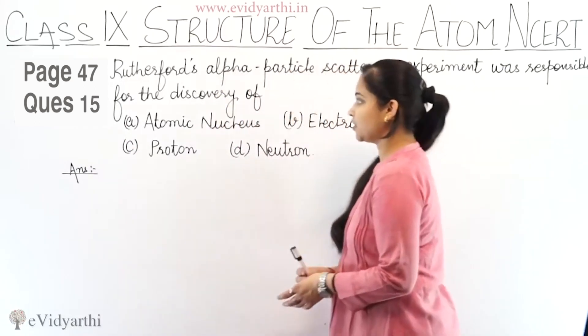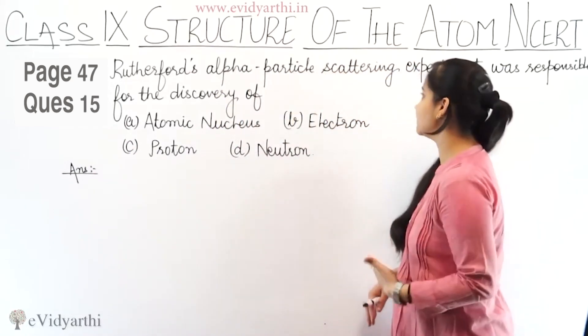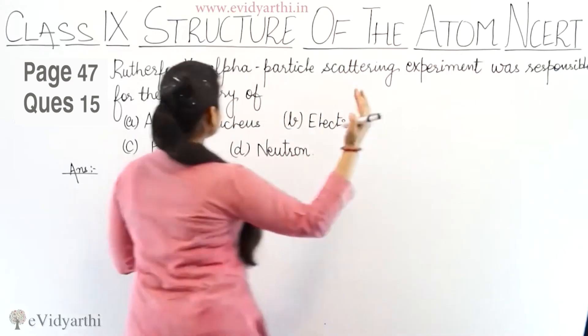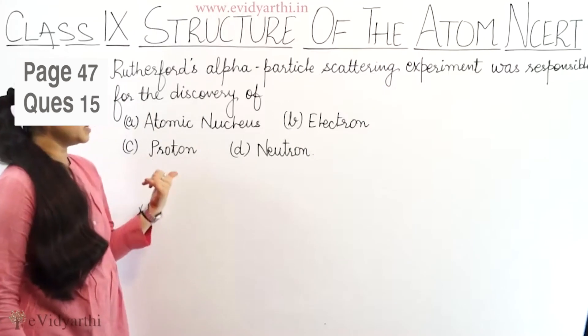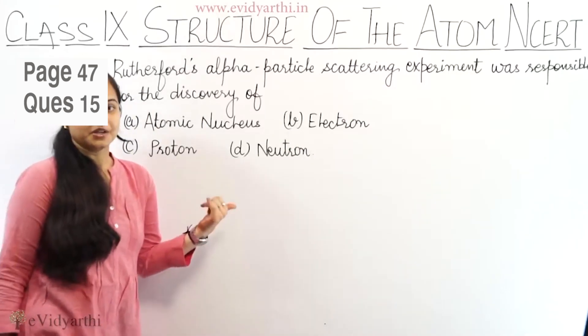Structure of the Atom. The question is: Rutherford's Alpha Particle Scattering Experiment was responsible for the discovery of: A. Atomic Nucleus, B. Electron, C. Proton, and D. Neutron.